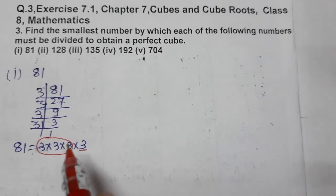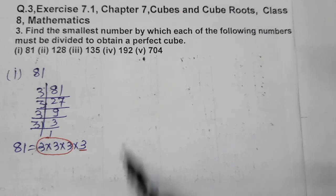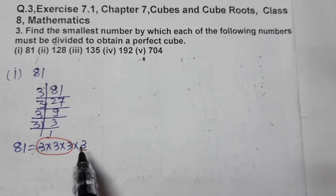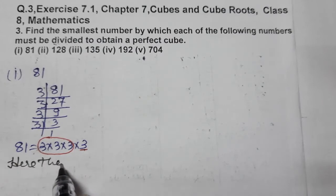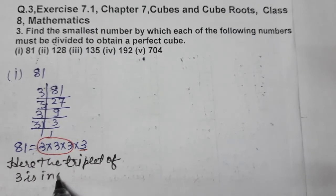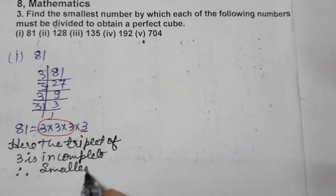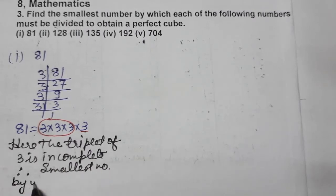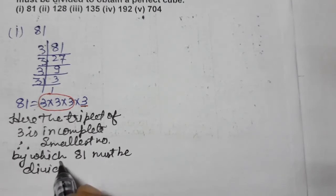One 3 is left. In case of multiplication we would have needed two more 3s, but here we have to remove this extra 3. The triplet of 3 is incomplete, so the smallest number by which 81 must be divided is 3.